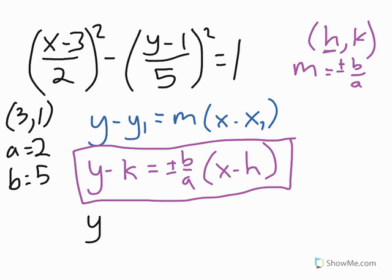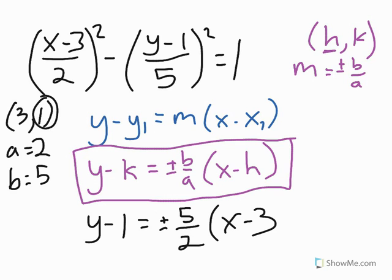So if I plug everything in, y minus k, k in this case is a 1, so I put a 1 in, and that's coming from right here. So I end up with y minus 1 equals plus or minus 5 divided by 2 times x minus 3.